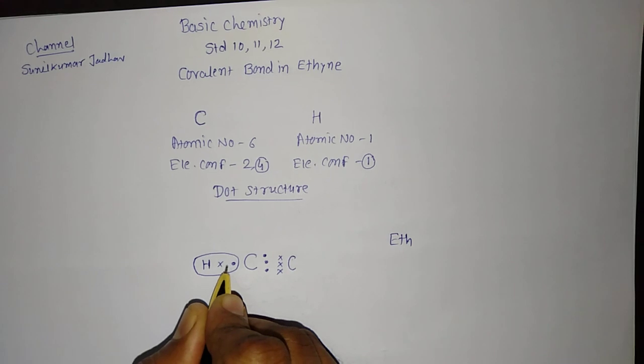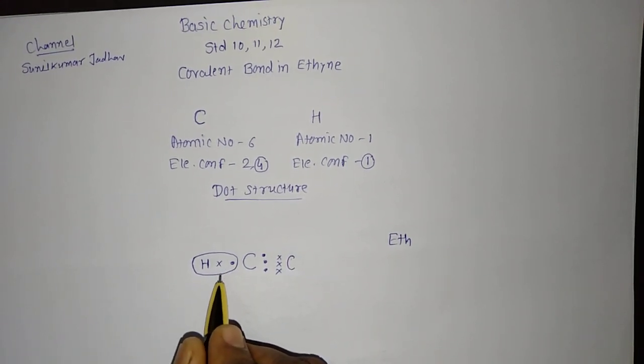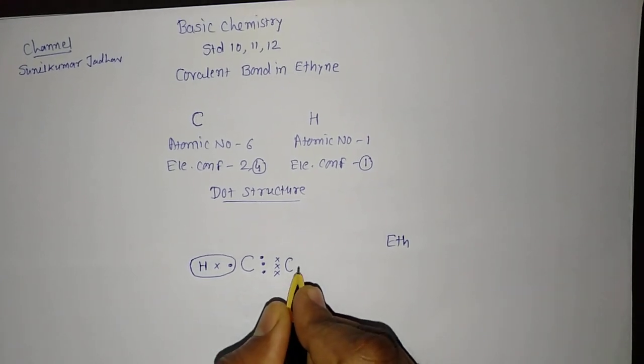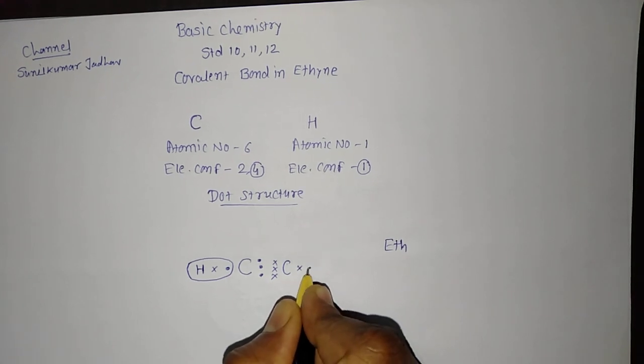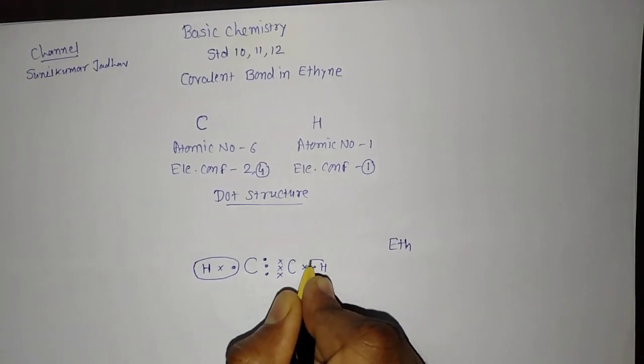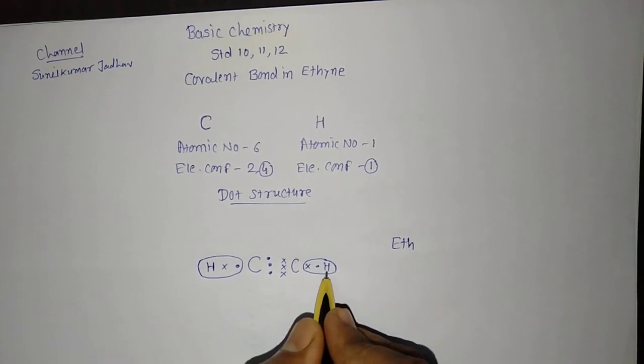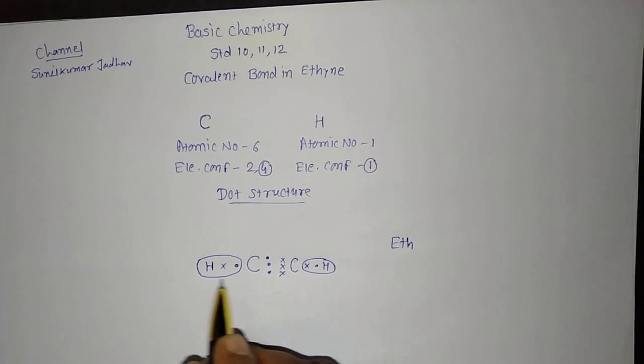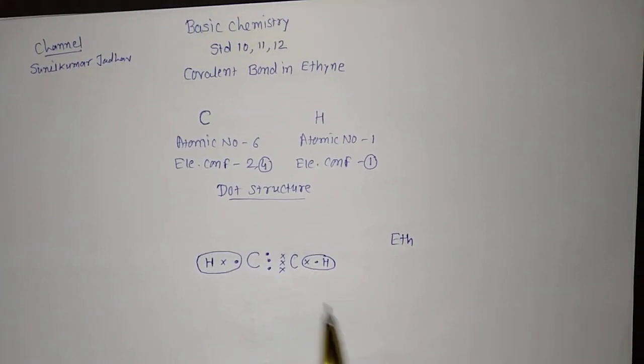So, its electronic configuration will be 2. Its orbit will be completed or we can say octet has been completed for this hydrogen. Similar way, here it will also do the same sharing with this carbon, hydrogen will do the sharing of one electron. So, hydrogen has completed its octet, that is 2 and here also it is 2.